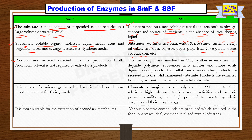In the SMF process, products are secreted directly into the production broth, so no additional solvent is required to extract the product. Whereas in the case of SSF, the microorganisms synthesize enzymes that degrade polymeric substances into smaller and more easily digestible compounds. Extracellular enzymes and other products are secreted into the solid fermented substrate, and products are extracted by adding solvent or water to the fermented solid substrate.